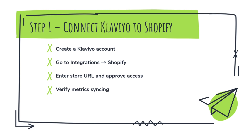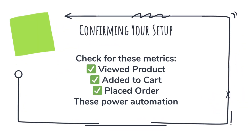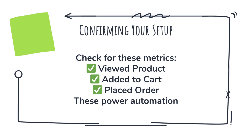First, sign up for a free Klaviyo account. Once you're in your dashboard, go to Integrations and search for Shopify. Click Add Integration, then enter your Shopify store URL, log in, and approve the permissions. Within minutes, Klaviyo will begin pulling in all your customer data — order history, browsing events, abandoned carts, and more.